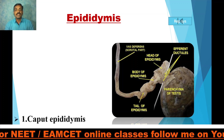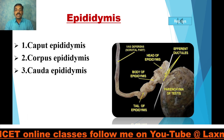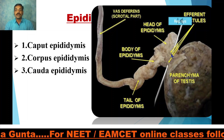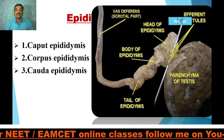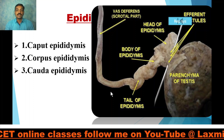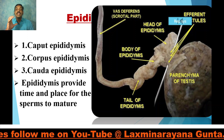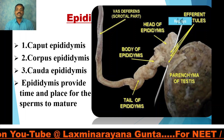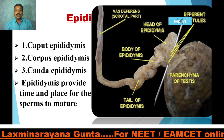The epididymis is further divided into caput epididymis (head), corpus epididymis (body), and cauda epididymis (tail). The caput epididymis is connected with the vasa efferentia. The most important function of the epididymis is that it provides time and place for the sperms to mature — the sperms stay here for some time and become mature.